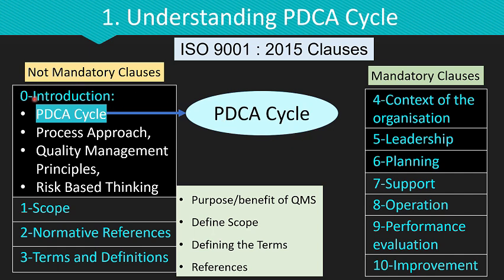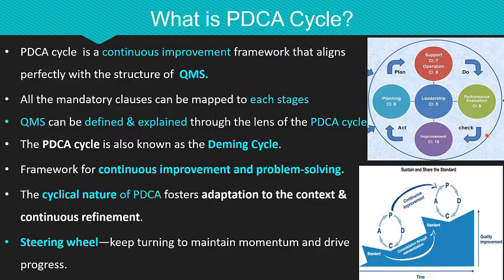The PDCA cycle is categorized under clause 0, the introduction clause, of ISO 9001:2015. In addition to the PDCA cycle, clause 0 also covers the process approach, quality management principles and risk-based thinking, which we will explore in upcoming lessons. The PDCA cycle is a continuous improvement framework that aligns perfectly with the structure of QMS — all clauses of ISO 9001:2015 can be mapped to each stage of the PDCA cycle.